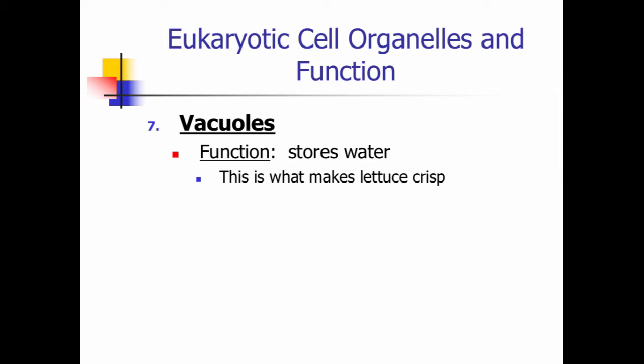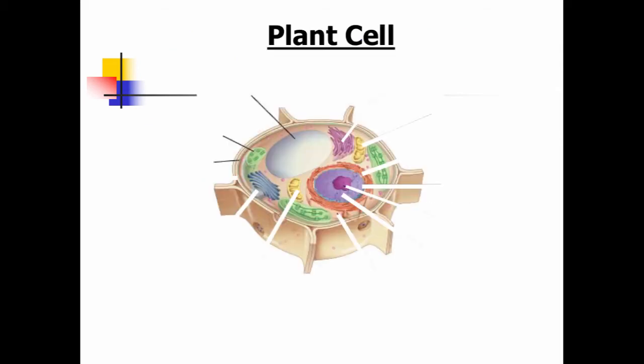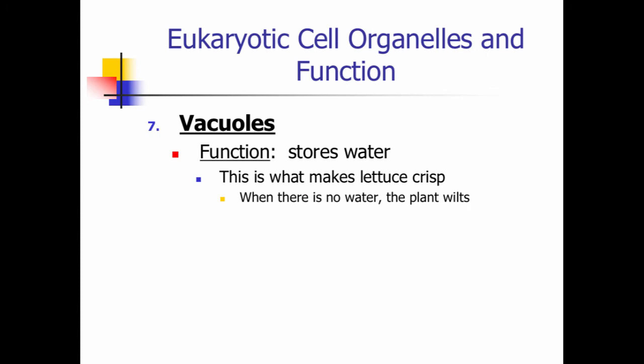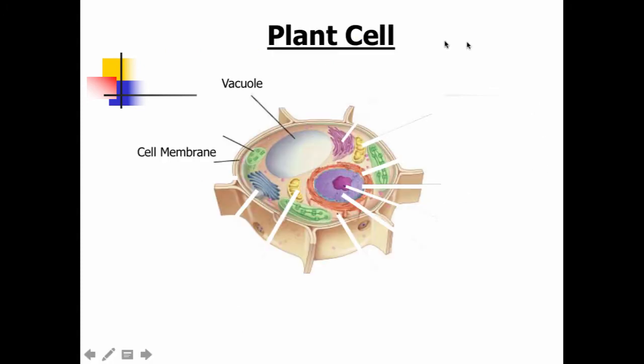So this is like what makes lettuce crisp. If it goes a while without it, it can become real droopy and not be crisp and kind of just saggy. Like I said, if there's no water, the plant will wilt. Okay, so if we look back at this, notice how long it is, it can push on these outer cells.